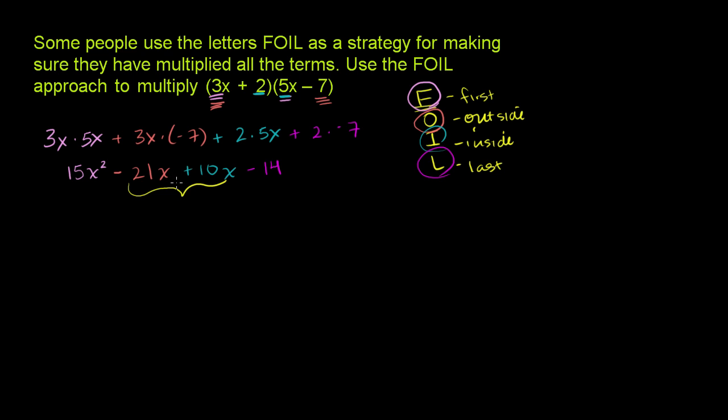Now we can combine these middle two terms right here. If I have negative 21x and then I'm adding 10x to that, that takes me back to negative 11x. And we have the 15x squared out front. 15x squared minus 11x minus 14, which is the product of these two expressions.